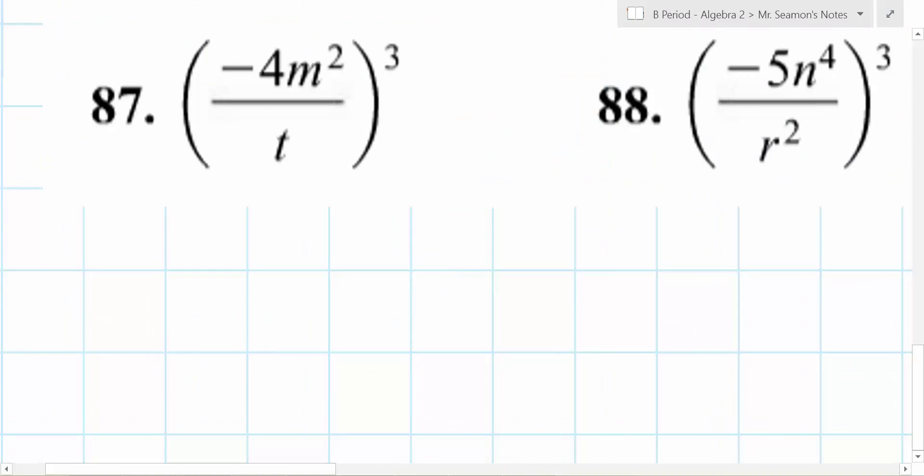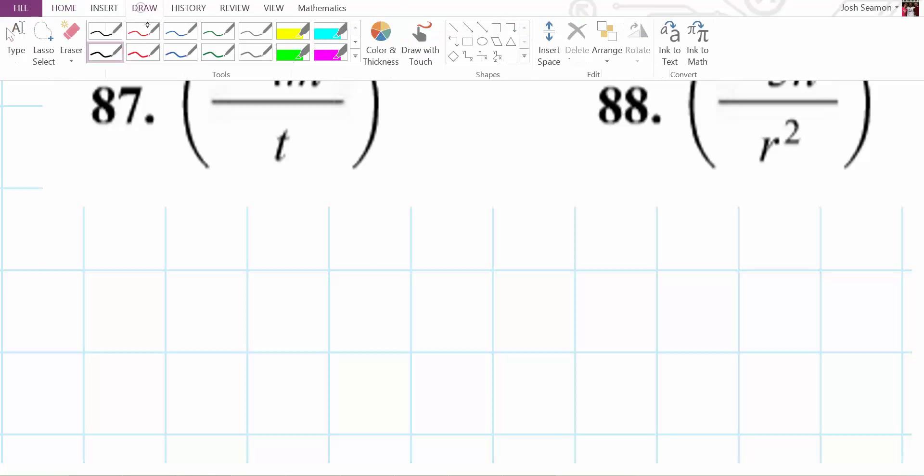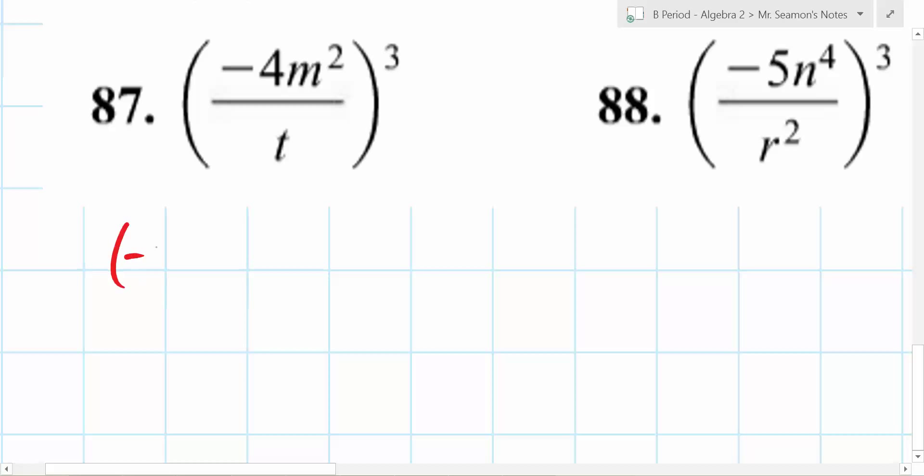Others from the homework. What should we do first? Can someone give me a good first step? Or really what the only first step is? Yes, Gabby. You can distribute the 2. Yeah, so it's going to be negative 4 to the 3rd and then m to the what? 6 over t to the 3rd. At this point, do you have any negative exponents? No.